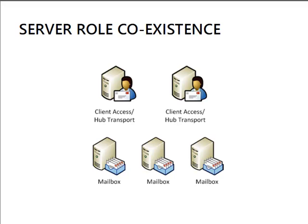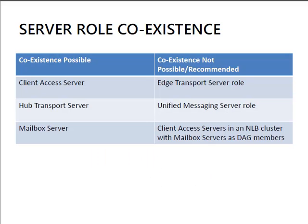Server roles can also co-exist in different combinations. It's not unusual to see Client Access and Hub Transport servers co-existing together in environments where the Mailbox data servers themselves are dedicated servers — a mix and match of different roles on different servers. Co-existence is possible between any combination of Client Access Server, Hub Transport Server, and Mailbox Server. You can combine those in any combination you wish, though it comes down to server hardware requirements and making sure you size your servers correctly.